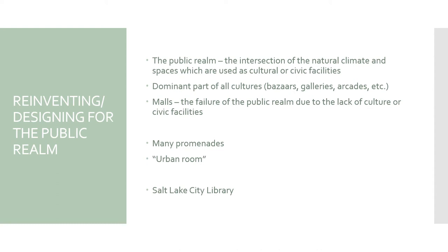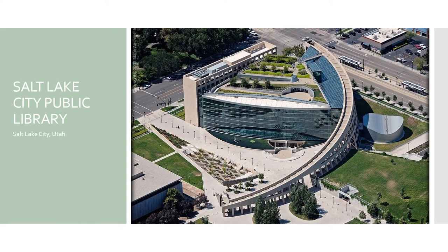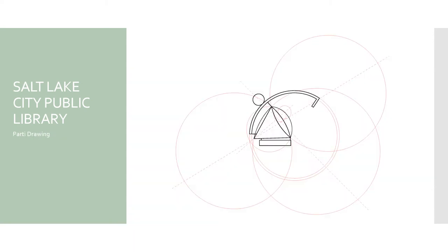Two tenets Safdie includes here are that design should have many promenades and what he defines as an urban room full of activity. A project that exemplifies this is the Salt Lake City Library in Salt Lake City, Utah. The parti diagram for this library shows that Safdie likes to use simple geometries — rectangles, triangles, and circles — and to create complexity he takes a series of circles aligned along axes and deletes certain geometries to enforce the circulation pattern he wants.